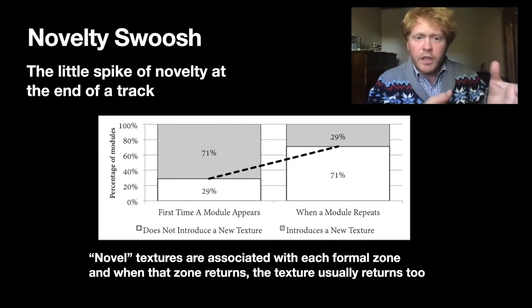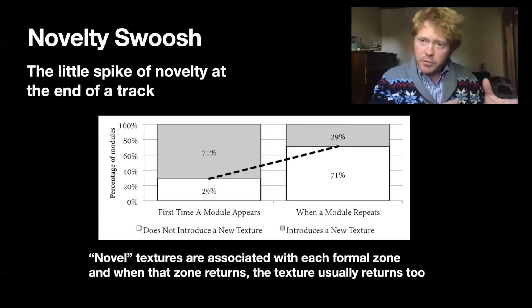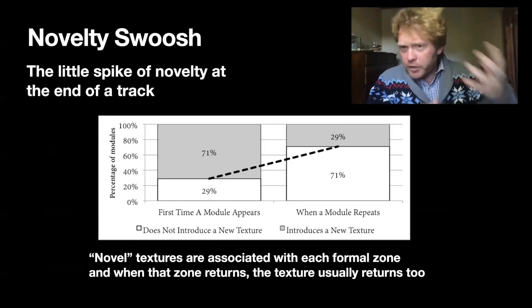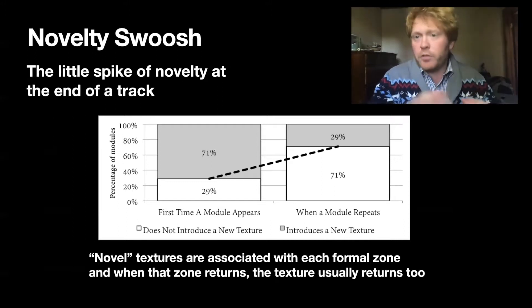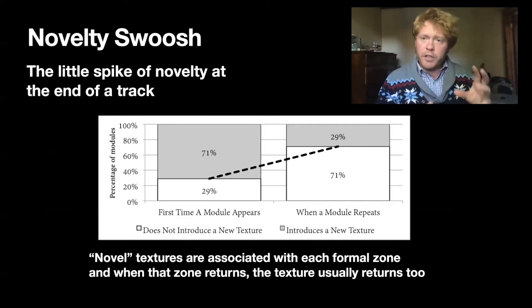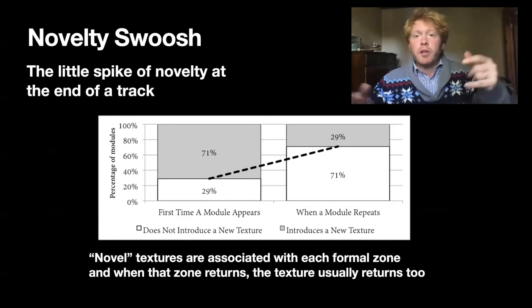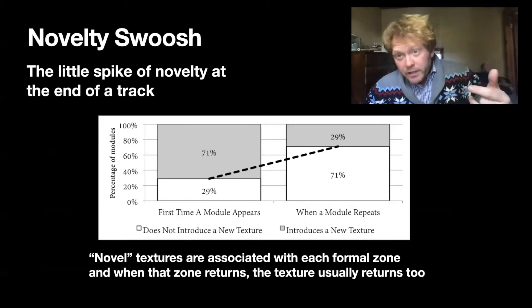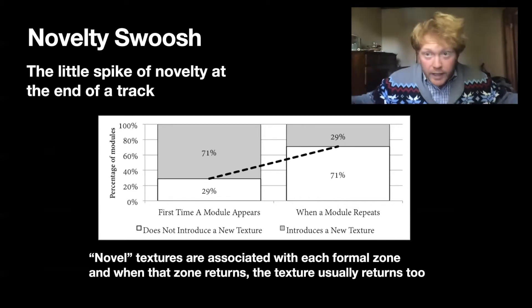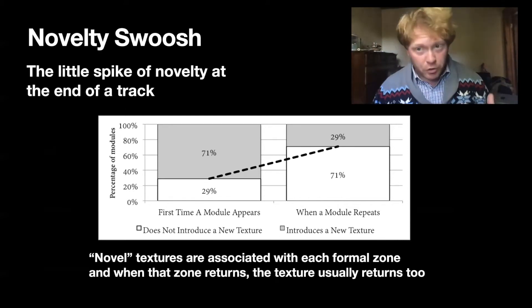What this chart shows is that the first time you hear a module — like the first time you hear a verse or the first time you hear a chorus in a song — you're hearing a new texture most of the time. But then when you hear that chorus repeat, that texture comes back too.